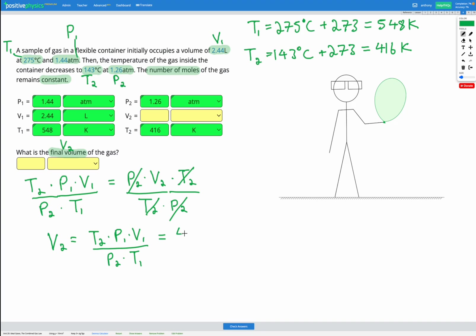So our T2 was 416. Our P1 is 1.44. Our V1 is 2.44 divided by our P2, which is 1.26, multiplied by T1, which was 548.